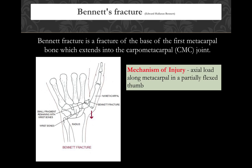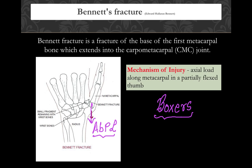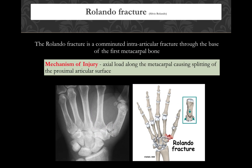Fractures of the base of the first metacarpal include two varieties: Bennett's and Rolando. Bennett's fracture involves the base along with the pull of the abductor pollicis longus muscle, with a dislocation. Because it involves the base, it is always intraarticular. Bennett's is a very common fracture in boxers.